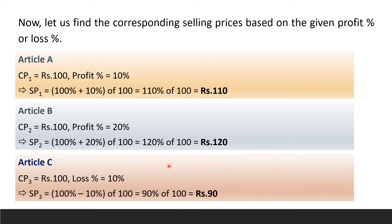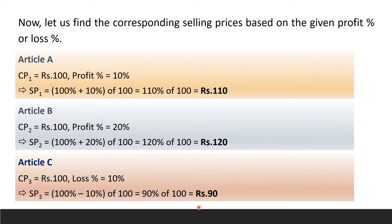Now let us consider Article C. It has a cost price of Rs 100 and a loss of 10%. In case of loss, the selling price equals cost price minus loss. Therefore, the selling price of Article C, SP3, equals 100% minus 10% of 100, that is 90% of 100, which equals Rs 90.